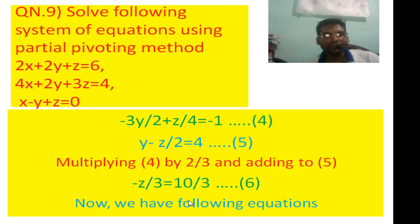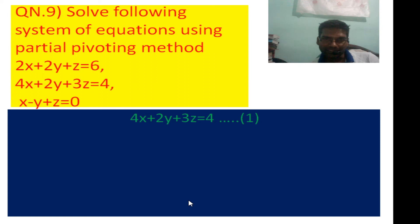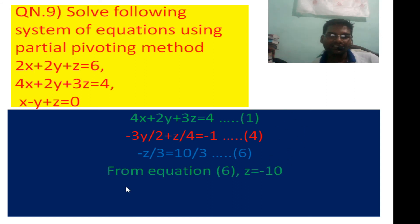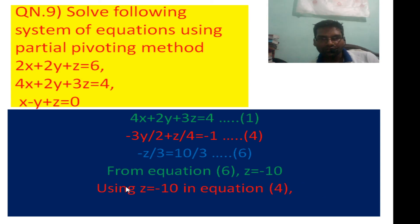From equation 6, z equals z minus 10. From equation 4, y equals minus 1.5. And then y minus 2.5 equals minus 1. We perform back substitution through the three equations using the single-variable results to find all unknowns.